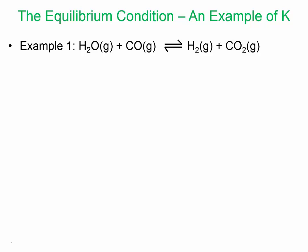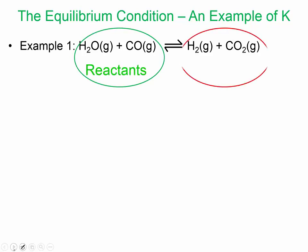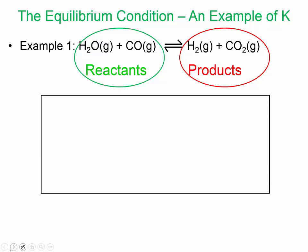Here's an example reaction: gaseous water vapor reacts with carbon monoxide and makes H₂ gas and CO₂ gas. These are the reactants and these are the products, and I'm going to show this graphically — what's going to happen over time during equilibrium.